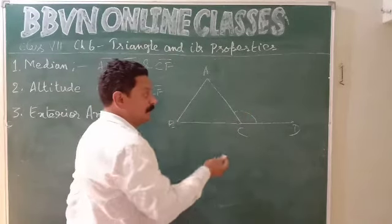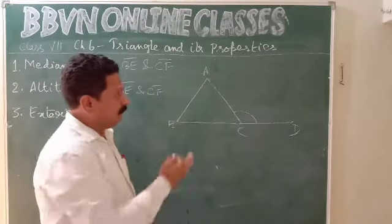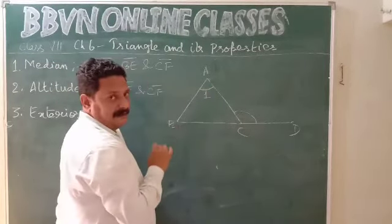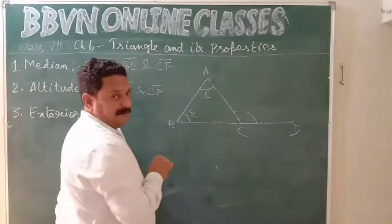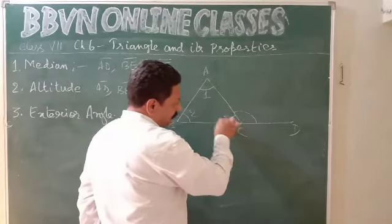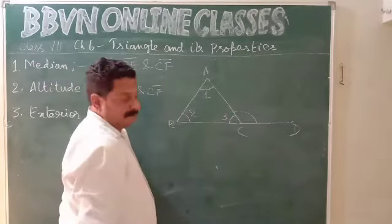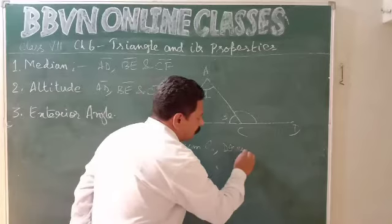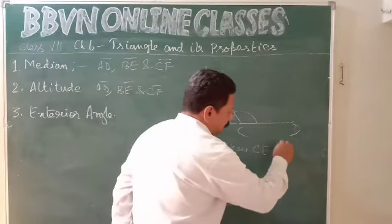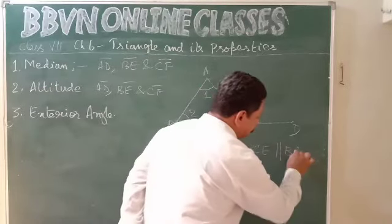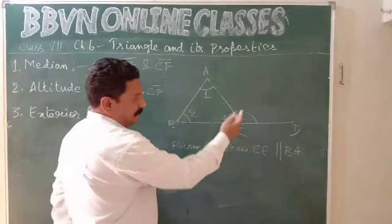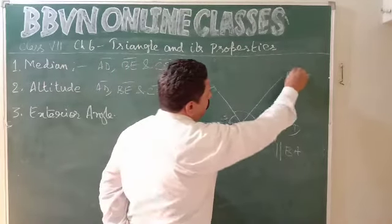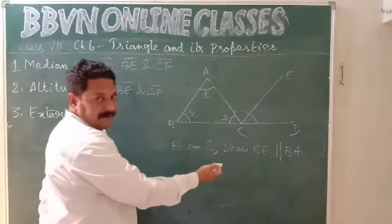Let us find out the measure of this exterior angle and whether it has any relationship with the other angles of the triangle. Let angle A be angle 1, angle B be angle 2, and angle C be angle 3. Now let us make a construction: from C, draw CE parallel to BA. So BA is parallel to CE — that is the construction we have done.